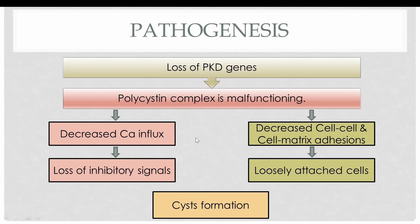Loss of PKD genes results in malfunctioning of the polycystin complex, which causes decreased calcium influx inside the cells and ultimately loss of inhibitory signals to proliferation, leading to increased proliferation of tubular epithelial cells. Moreover, the defective polycystin complex also decreases cell-to-cell and cell-to-matrix adhesions, causing the epithelial cells to be attached in a very loose manner.